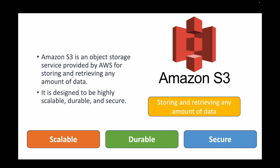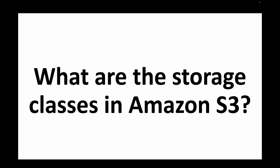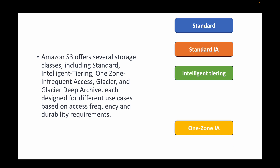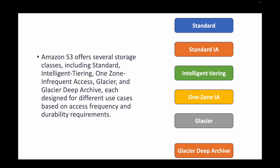The next question is: what are the different storage classes in Amazon S3? Amazon S3 provides different storage options: Standard (the default), Standard-Infrequently Accessed, Intelligent Tiering, One Zone-Infrequently Accessed, Glacier, and Glacier Deep Archive. These options are designed for different use cases based on access frequency and durability requirements. By default, Standard is what you get.